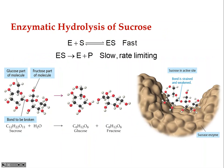This example shows the breakdown of sucrose — table sugar, C₁₂H₂₂O₁₁ — by the enzyme sucrase. Sucrose is a disaccharide made of two linked monosaccharides: glucose and fructose. It enters the active site of sucrase, the bond breaks, and the two separate monosaccharides are released. This is the process of digestion. The fast step is enzyme-substrate binding; the slow step is bond breaking.